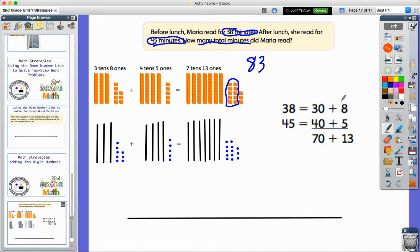We also can look at it in the digits, in numerical form, breaking apart the 38. So we've got it in expanded form, again by place value. So we have a group of 30 and 8, and a group of 40 and 5.